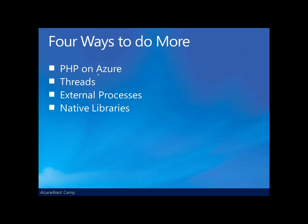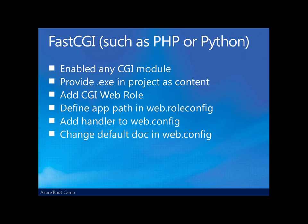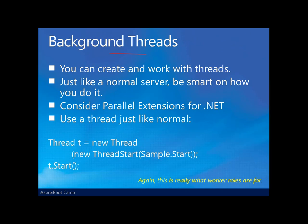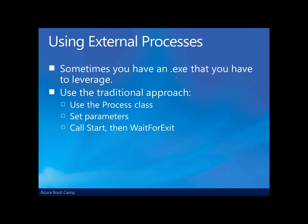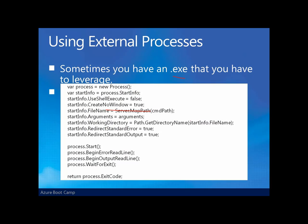What else can we do with Azure? You can put PHP applications in Azure, work with threads in your web and worker roles, and request use of external processes or native libraries. For PHP or Python — fast CGI-type applications — make your executable part of your project and expose it as a web role in Azure. For background threads, just create and work with threads as you would in a normal server environment using the parallel extensions for .NET. To call an external process, use the Process class, set up parameters, start, work with, and wait for exit, just as in any .NET application.